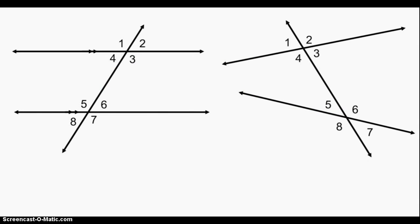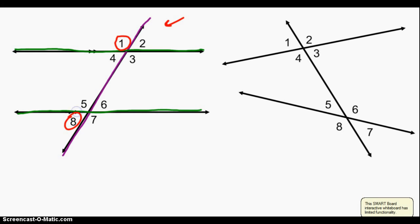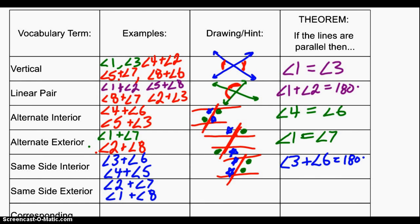Same side exterior angles are much the same. With your transversal and two parallel lines, they're going to be on the same side of the transversal and on the exterior of those two parallel lines. So one and eight would be same side exterior. Two and seven are the other same side exterior angles. Same side exterior angles are supplementary — if the lines are parallel, angle one plus angle eight will add up to 180 degrees.